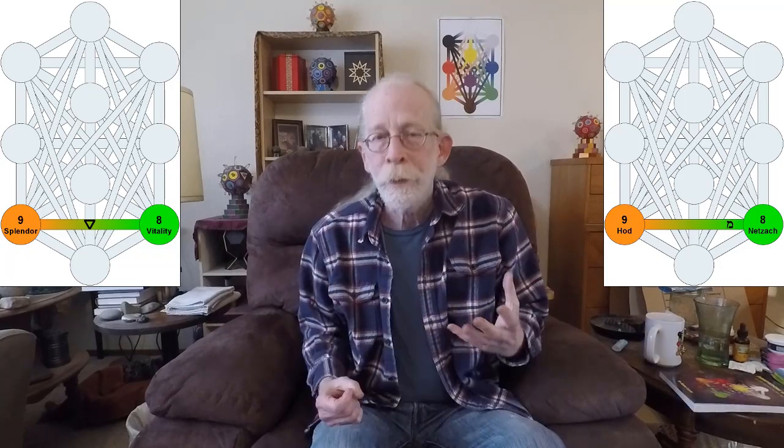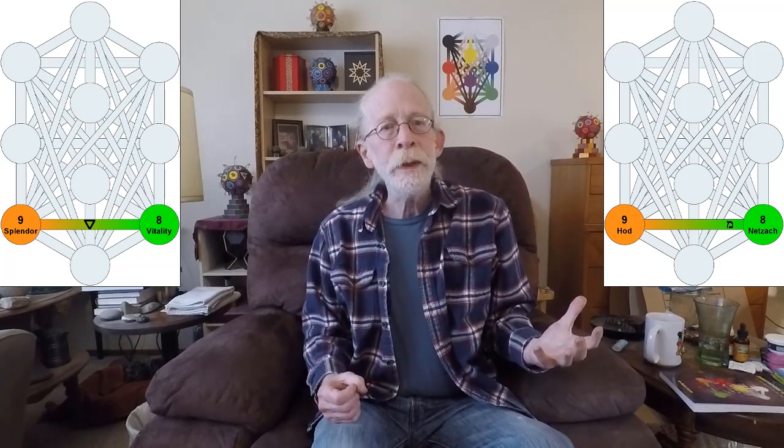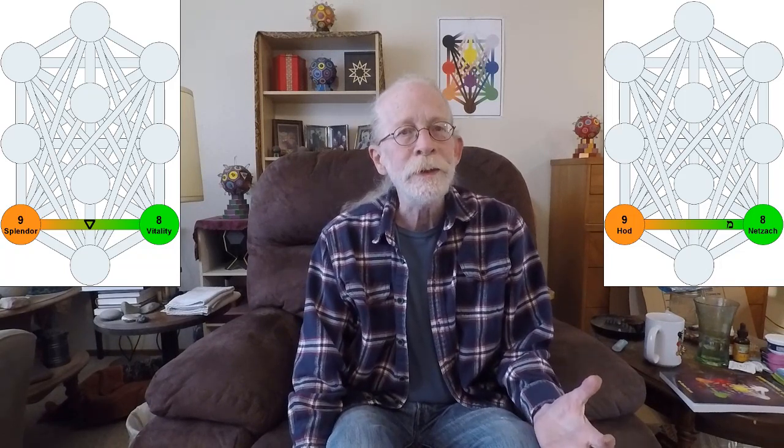In Aleph, we had the polarities of collectivity and individuality. In Aleph, the air mediated between these two poles, united these two poles. Now here, with water, we have the polarities of resonance and dissonance. The opening and the closing between self and other.